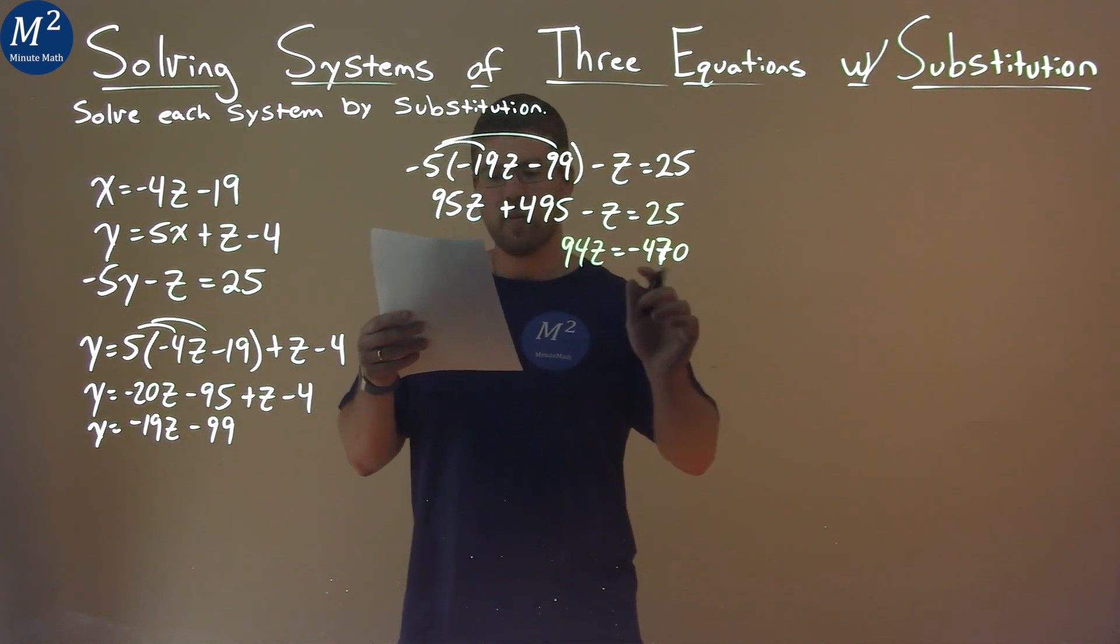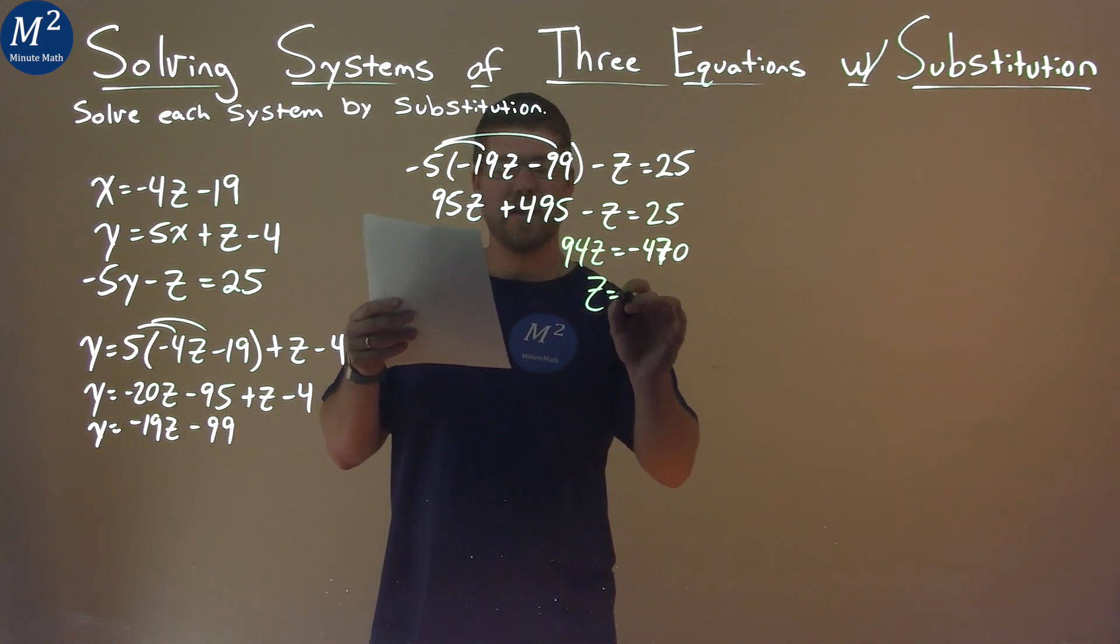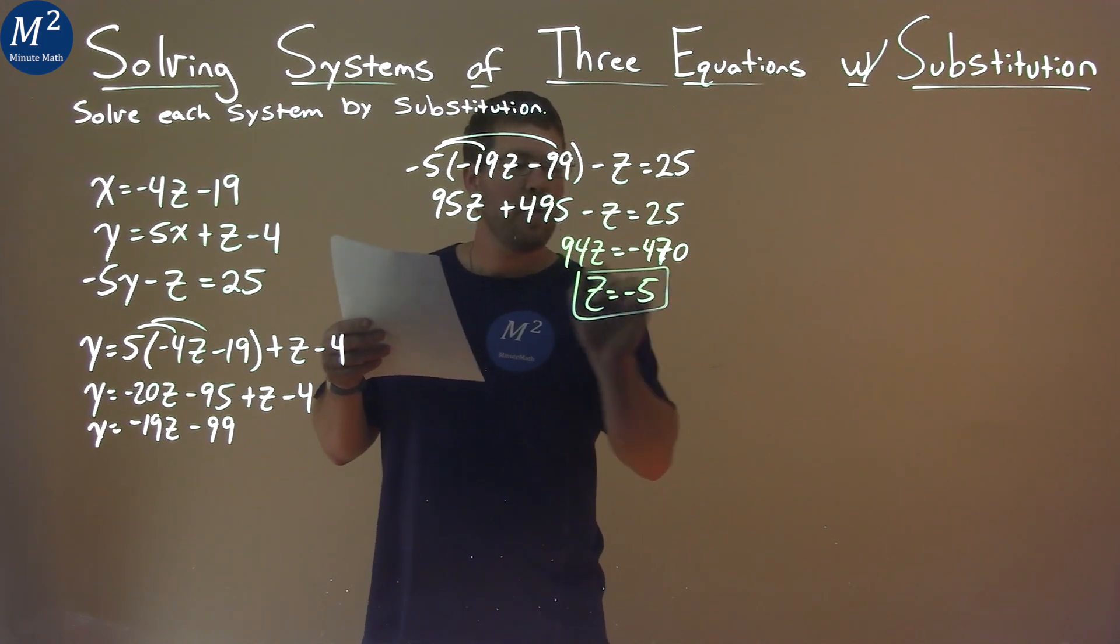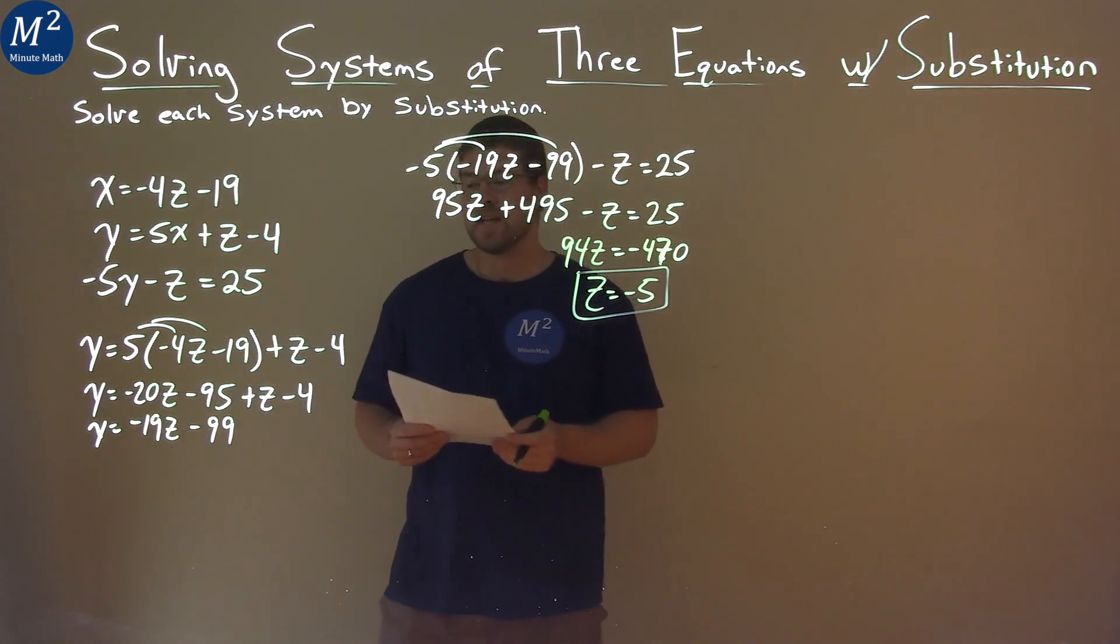And 95z minus 1z is 94z. Divide both sides by 94, and z equals negative 5. And we have our first variable answer. Z is negative 5.